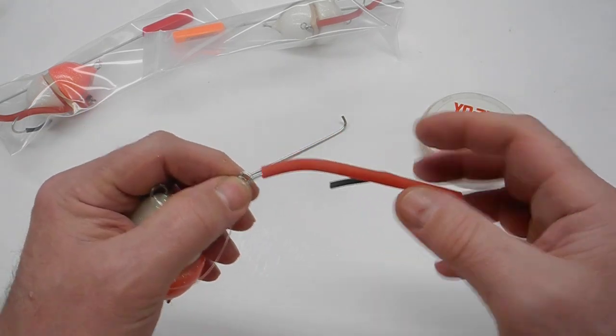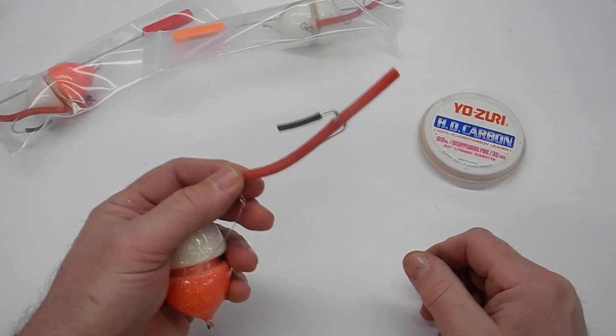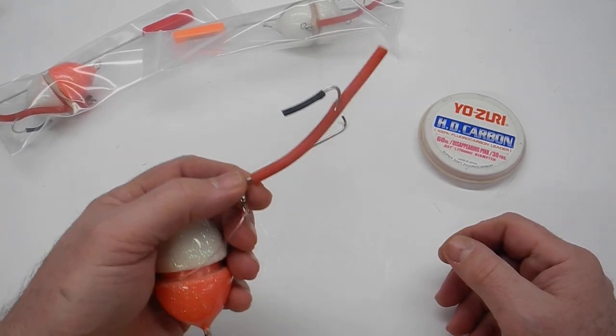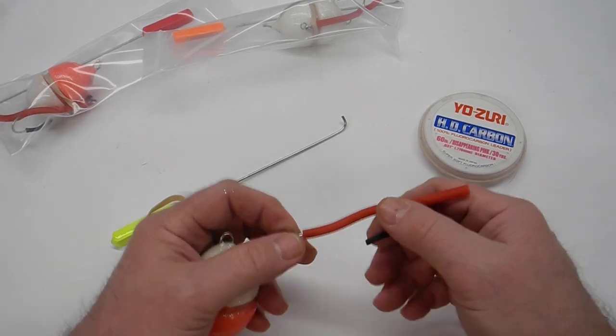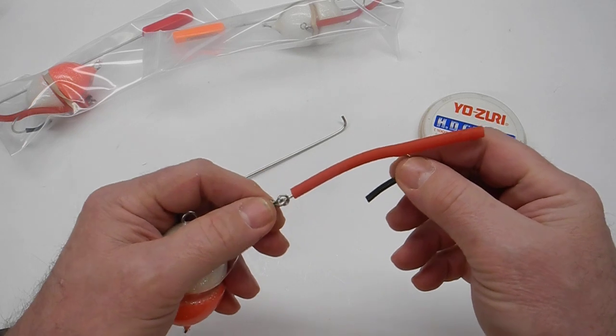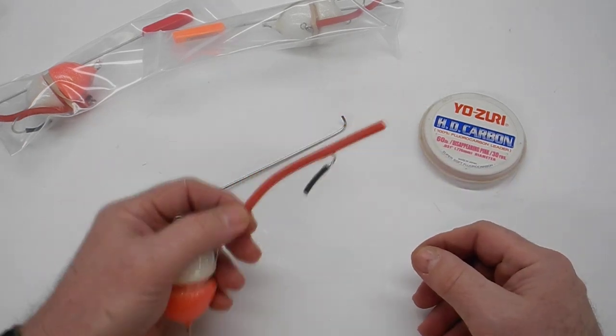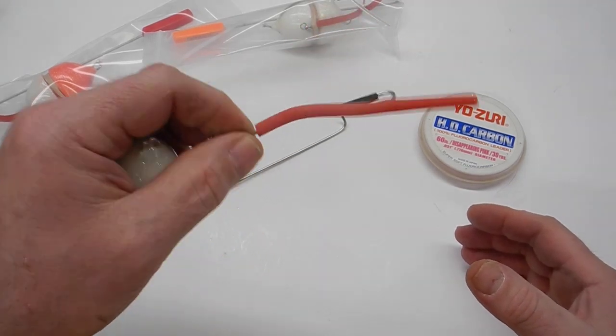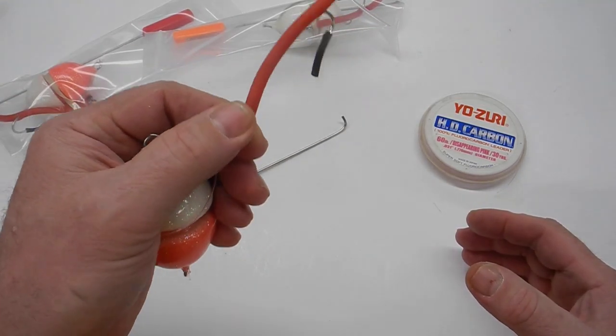If you've ever been through the Raritan Bay and come across birds picking off worms off the surface, well that's what you're looking at—a cinder worm breeding or hatch. If you actually find fish on them, they're only going to hit something similar to this because